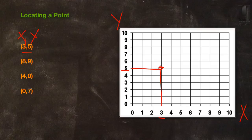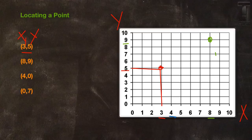For point (8, 9), we just find 8 on the x-axis, 9 on the y, and then we're going to find the point where they intersect. For (4, 0), we're finding 4 on the x, and since there's a 0 for y, we actually don't have to go up anywhere on the y-axis. The point would just be right here.